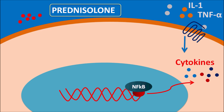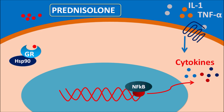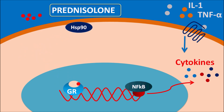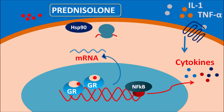Prednisolone can reduce this inflammatory response. Being a steroid, this drug can act on glucocorticoid receptors which are present within the cytoplasm. These glucocorticoid receptors are associated with the protein HSP90 — heat shock protein 90. Prednisolone enters the cell and binds to the glucocorticoid receptors, where HSP90 dissociates and glucocorticoid receptors are internalized. They then undergo dimerization and interact with DNA, undergoing gene transcription to produce mRNA. This mRNA brings about protein synthesis to prepare proteins such as annexin A1. Annexin A1 inhibits the synthesis of various prostaglandins and other inflammatory mediators derived from the COX pathway, thereby controlling the inflammatory response.